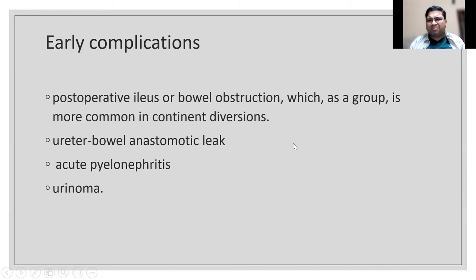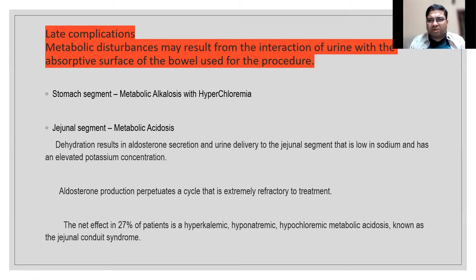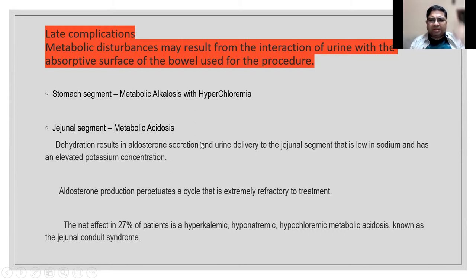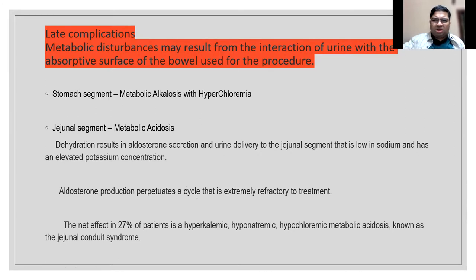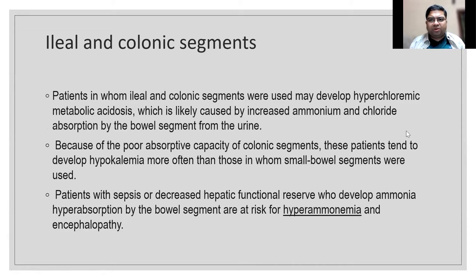Metabolic complications: if you use a stomach segment, there is a chance of metabolic alkalosis because H+ ions (protons) are secreted - treat with proton pump inhibitors. There is a high chance of hyperchloremia. Metabolic alkalosis and hyperchloremia are the complications with gastric segments. With jejunal segments, patients develop metabolic acidosis with vomiting, dehydration, excess aldosterone secretion, low serum sodium, hyperkalemia, hyponatremia, and hypochloremia.